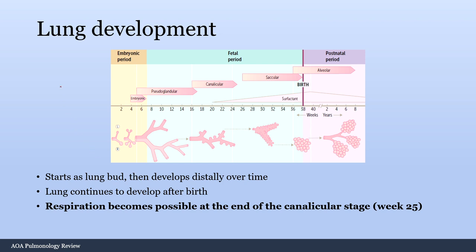Starting out with physiology, we have lung development and there are five stages. First Aid has the mnemonic 'every pulmonologist can see alveoli.' The key facts are: embryologically, the lungs start as the lung bud and develop distally over time; the lung continues to develop after birth, with alveoli still forming up to age eight. Most importantly, respiration first becomes possible at the end of the canalicular stage, around week 25.